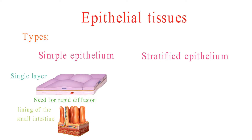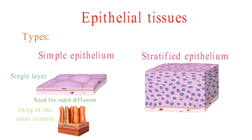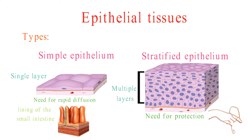Stratified epithelium is made up of multiple layers of cells. It is found in areas where there is a need for protection, such as the skin.